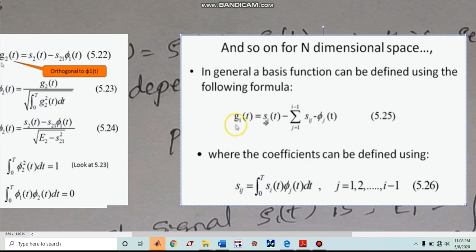G3 of t. Here it will be S3 of t. J is equal to 1 to 3 minus 1, which will be 2. So this is the equation: Sij into Phij of t. So if we substitute the Si values and Phij values and Sit values and the summation of this, we will get Gi of t.